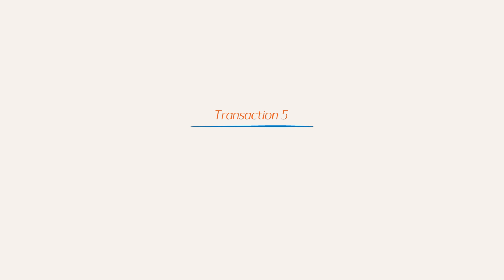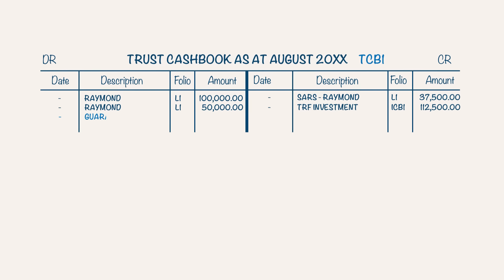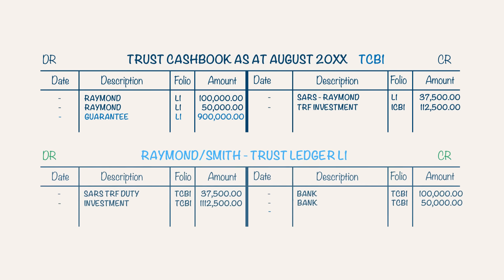Transaction 5: The transfer and the bond are registered. You receive R900,000 from the bond attorneys. You debit the trust cash book as money is received from the bond attorneys, and you credit the trust ledger account of Raymond/Smith.